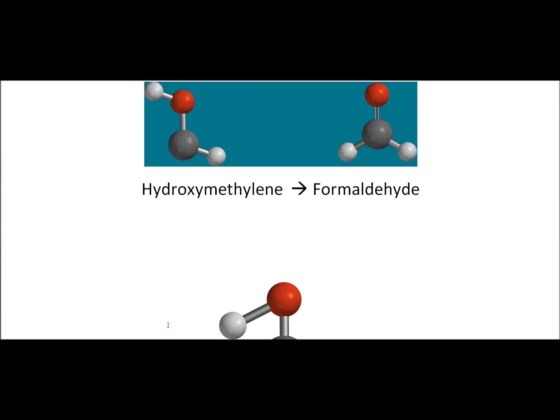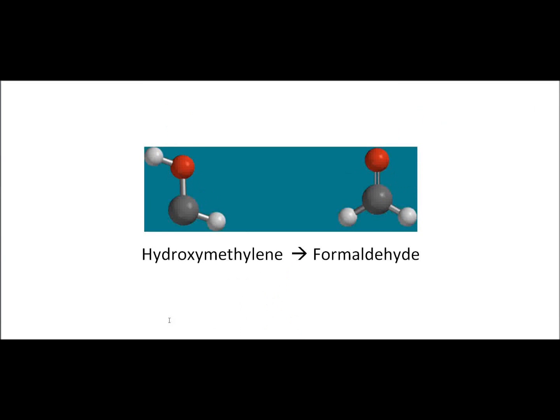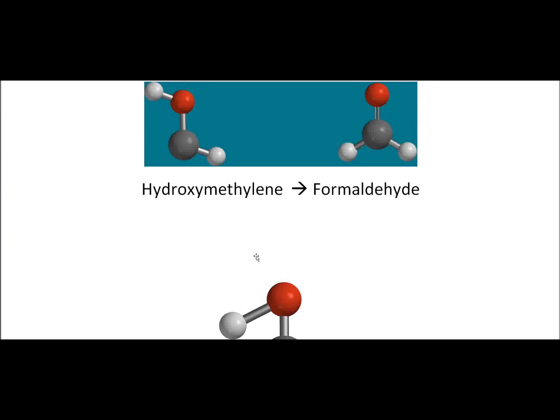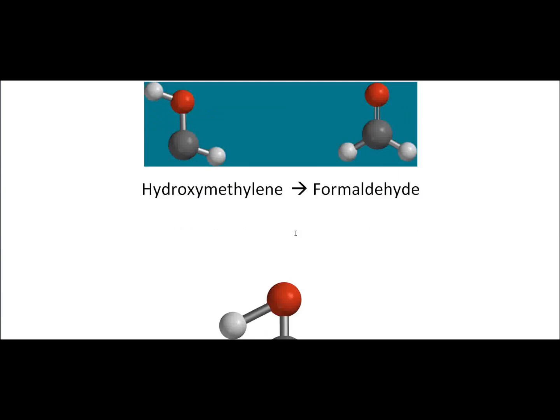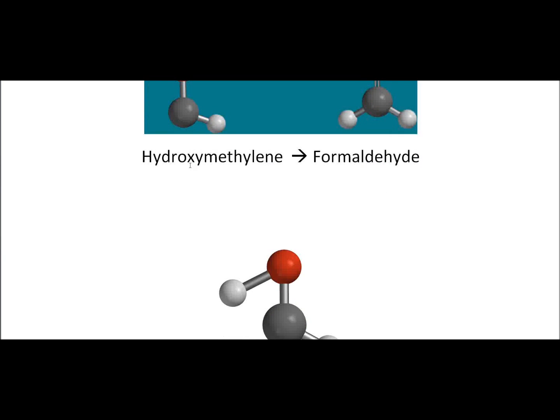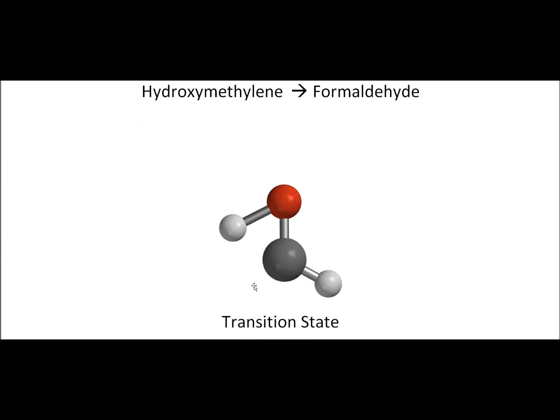We're going to look using a semi-empirical molecular modeling method called PM3. We don't have to worry about the details of the calculation, but we want to look at how the energy changes as you go from hydroxymethylene through the transition state to formaldehyde, how the energy of the reactants and products compare, and the barrier you have to go over, which is called the activation energy.